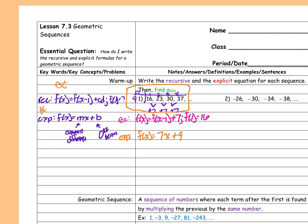Once I find all my information in my table, then all I'm going to do is substitute in. And I need to find f(100). So seven times 100 plus nine equals 700 plus nine, which is 709.